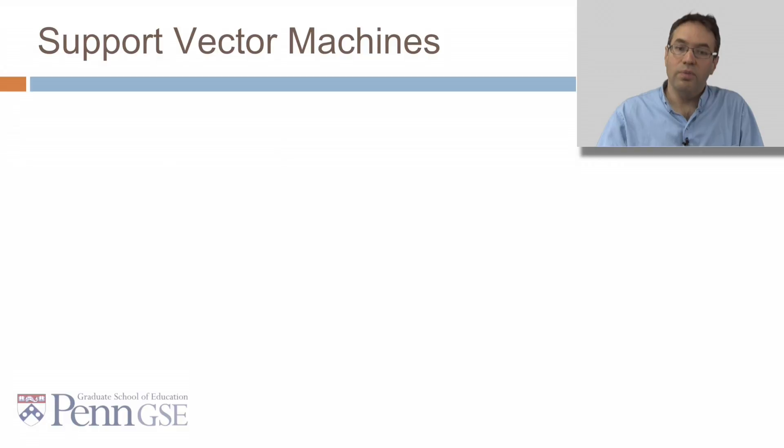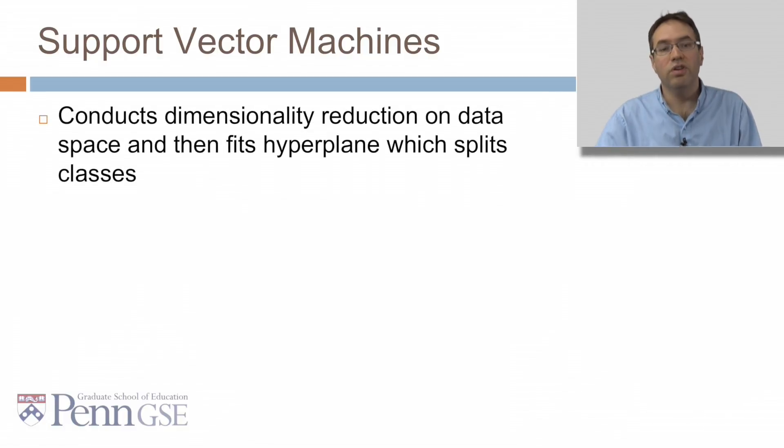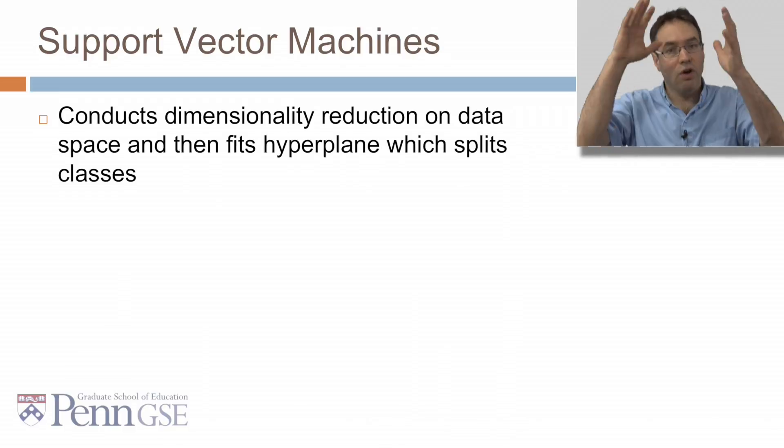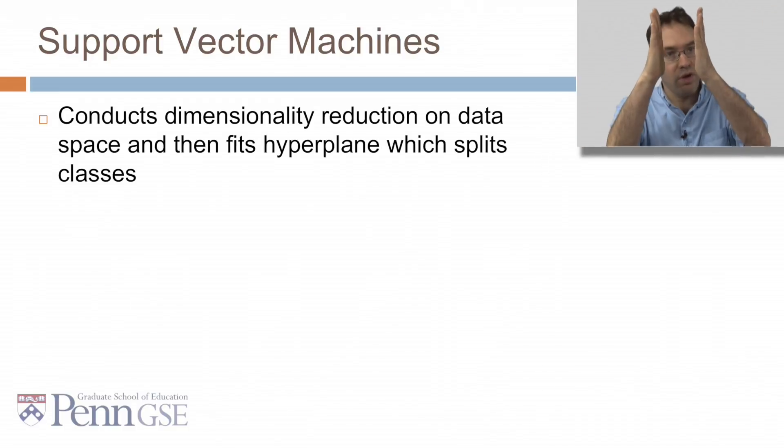One of those algorithms is support vector machines. Support vector machines conduct dimensionality reduction on the data space, which is to say that they take a large number of variables and collapse it down to a smaller number of variables. And then they fit a hyperplane, which splits the classes.